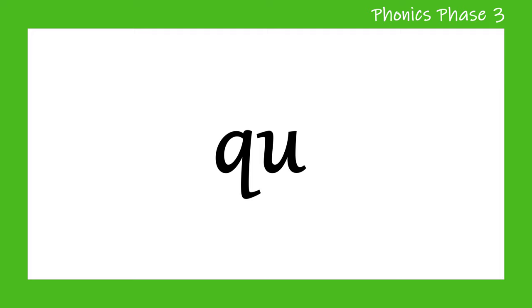Hello and welcome to Little Learners. In today's video we are going to be looking at the digraph QU — when Q and U come together to make the sound QU. Two letters, one sound. Let's have a look at some words that use this digraph.